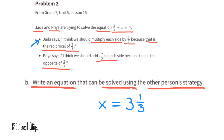So it turns out Jada was also correct, but it took much longer to find the value of x. The equation used to answer part b was the original equation: two-thirds plus x equals four.